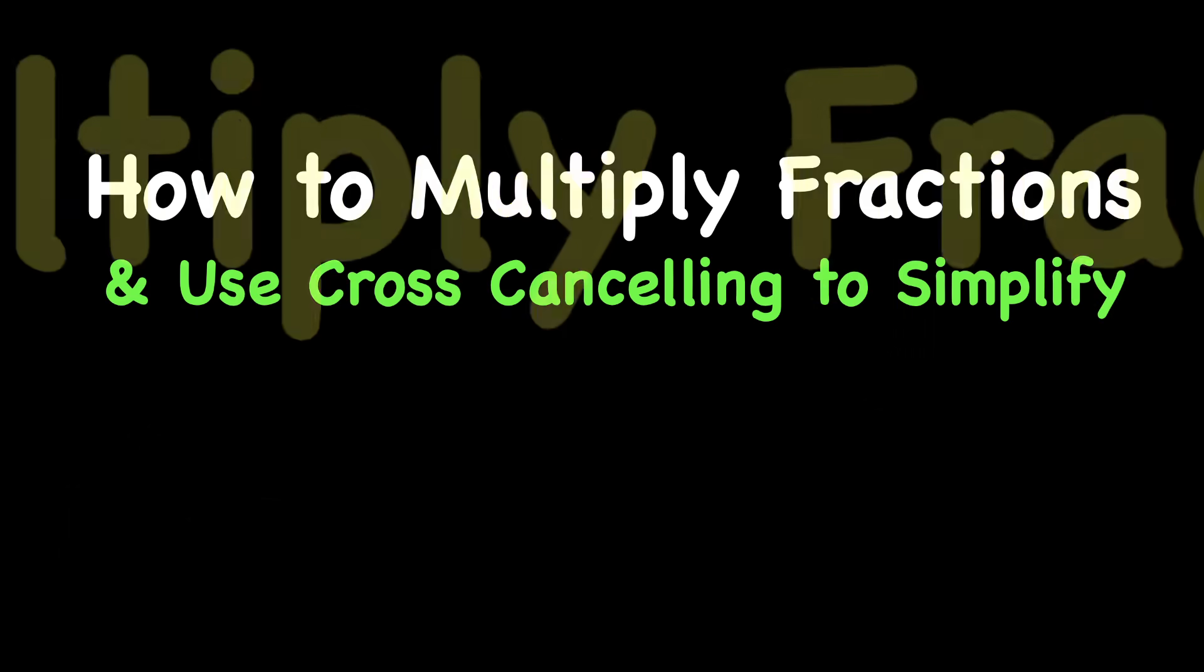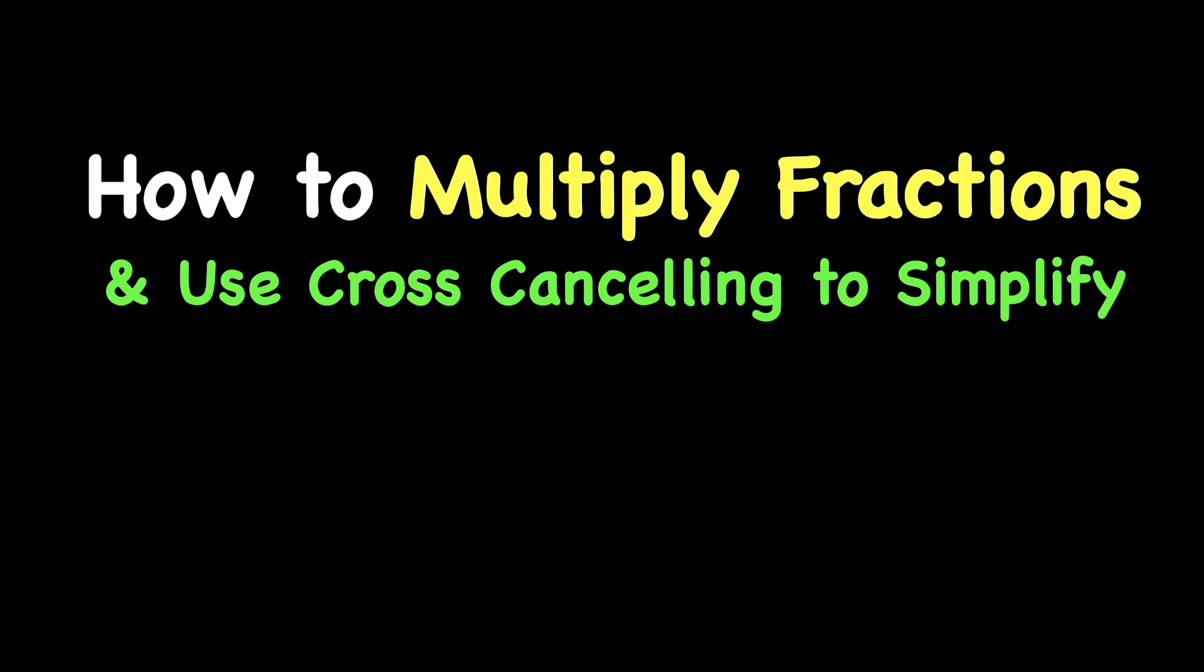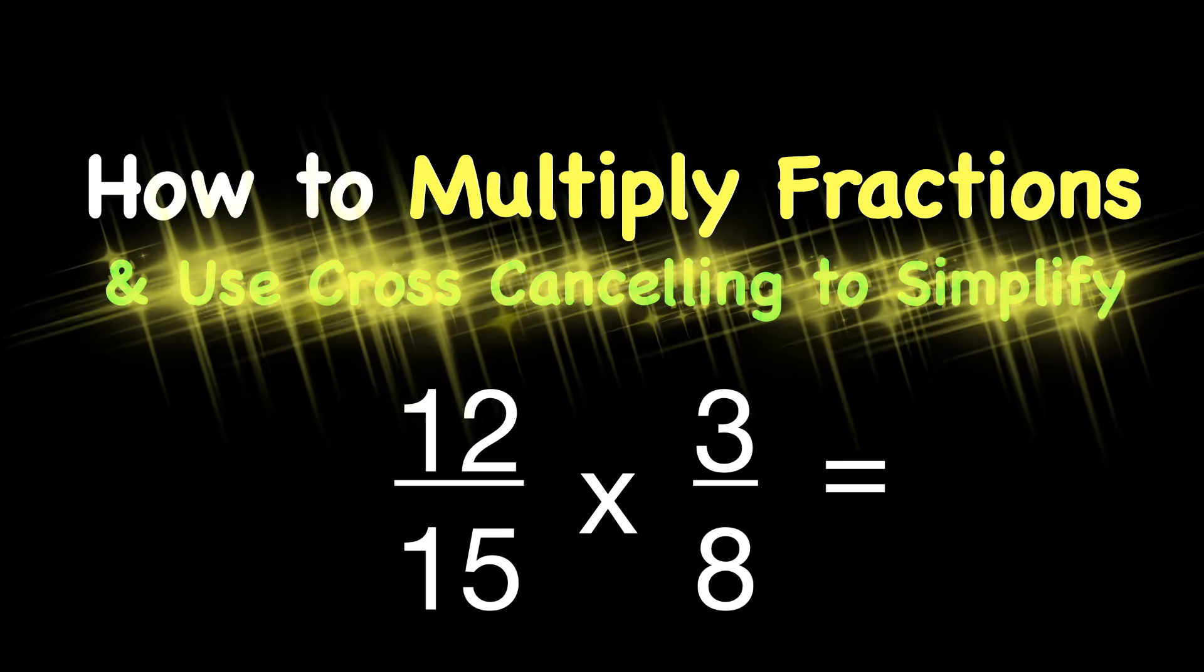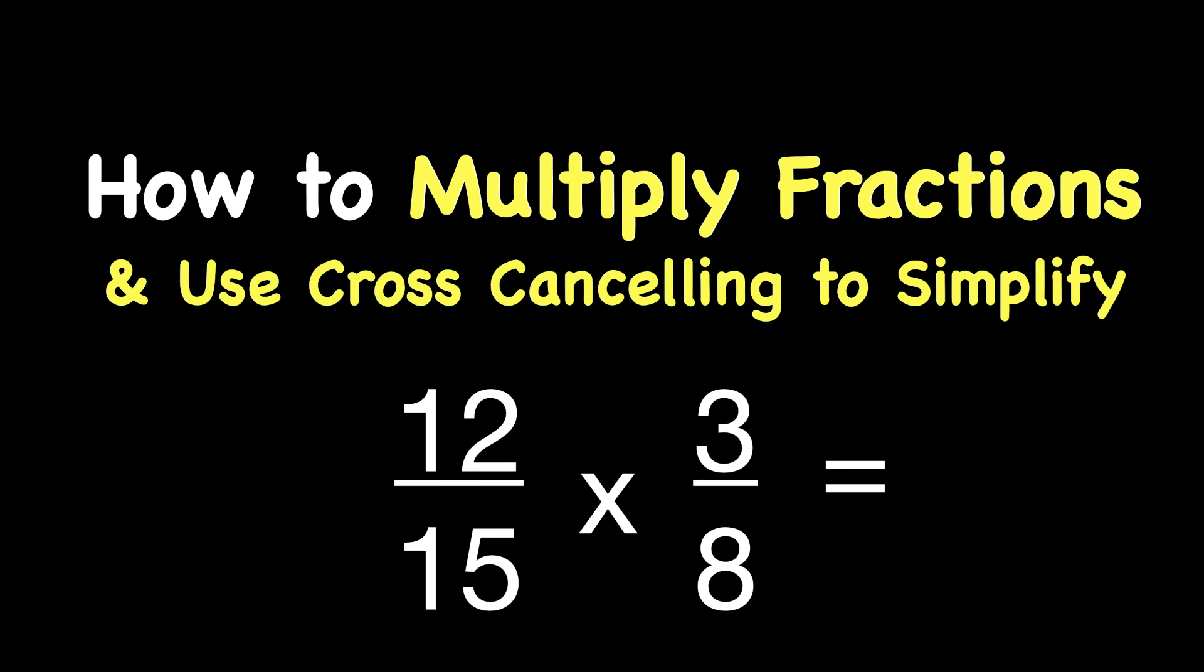Today's lesson is how to multiply fractions. For example, 12 fifteenths times 3 eighths, and use a cross-canceling strategy to simplify.